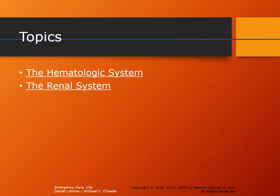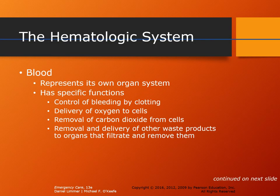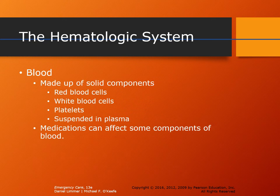Today we're going to be talking about the hematologic system and the renal system, breaking that down into easier-to-digest components. First and foremost, we need to talk about blood — specifically human blood. Blood is represented as its own organ system and has its own functions. It has the ability to control bleeding by clotting, the primary function of delivering oxygen to cells, removing carbon dioxide from cells, and helping with the removal and filtration of other waste products.